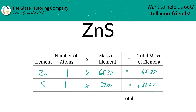The total mass of the entire compound is just simply going to be the summation of those individual total masses of the elements. So this is simply going to be 97.45 grams per mole, because we're finding molar mass. Now you know how to find the molar mass of zinc sulfide. Thanks so much for tuning in.